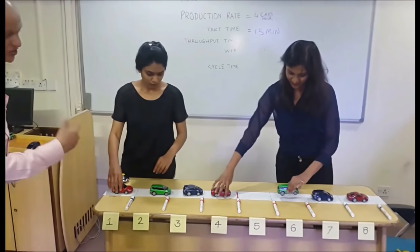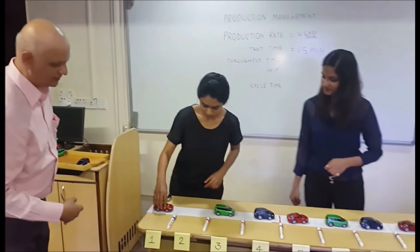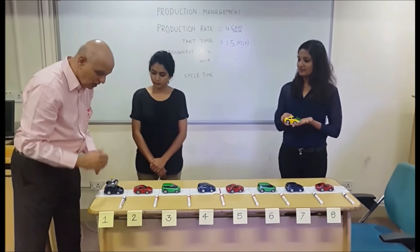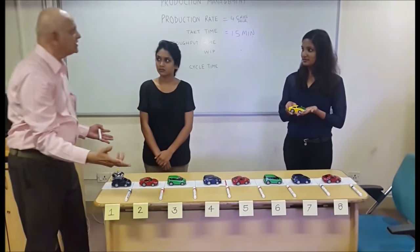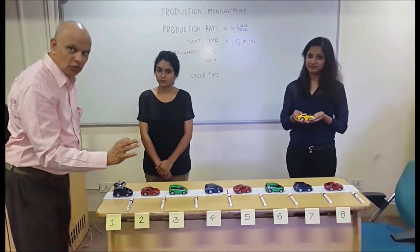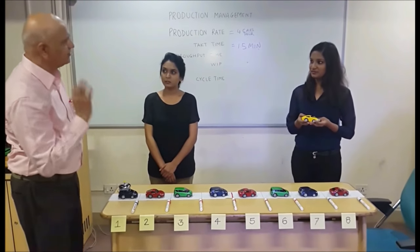And as a result, each of the cars move ahead by one. How long did it take for the yellow car to move from the first station to the last? Two hours. Why two hours? Because that was the throughput time.